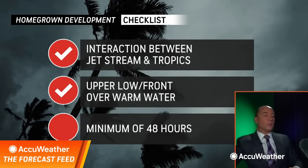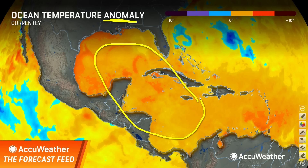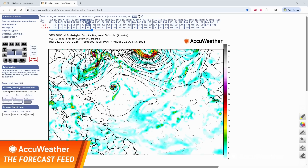We're not done talking about homegrown development, because we have problems in the Caribbean. I've been talking about this because look at the water temperatures across the Caribbean — these are the anomalies, which compare current water temperatures to historical averages. What you're seeing with these yellows, reds, and oranges are water temperature anomalies about three to four degrees above the historical average. That means this water is super warm — you're looking at water temperatures in the middle to upper 80s. With that in mind, there is a concern heading into next week: the same dip in the jet stream may be able to spin something up in the Caribbean and the Gulf.